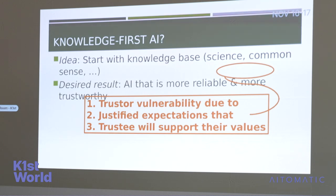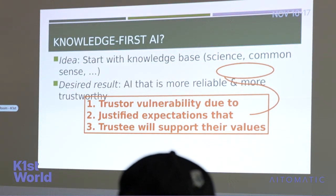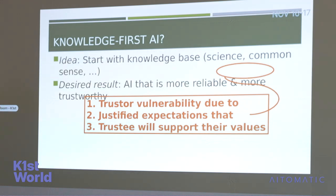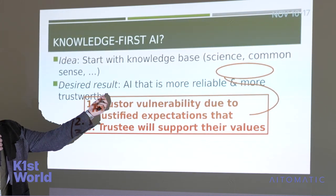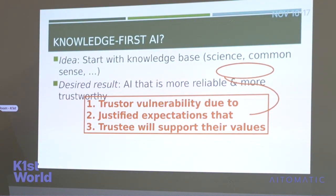The idea that a lot of people are starting to have — and this is taking root in the development of trustworthy AI systems — is that what we really need to do is start with some core of human knowledge, whether this is intuition, common sense, scientific knowledge, or whatever it may be, and then build from that to build something that's trustworthy. To understand why that might work, we need to think about what it is for something to be trustworthy — a phrase that gets thrown around a lot.